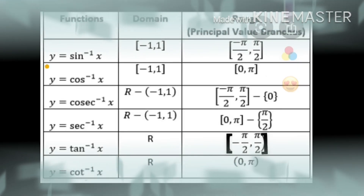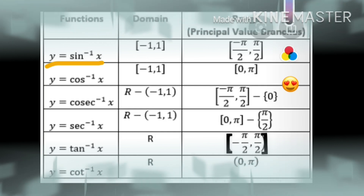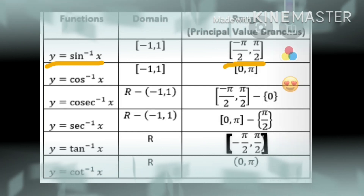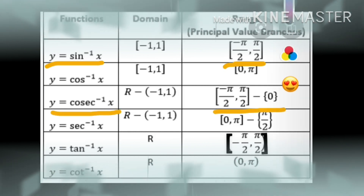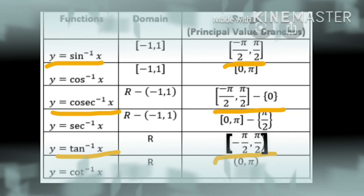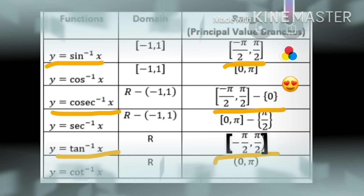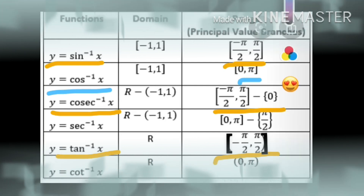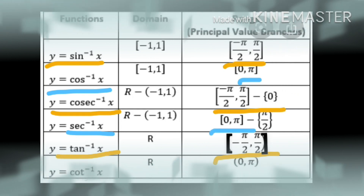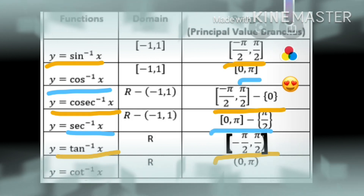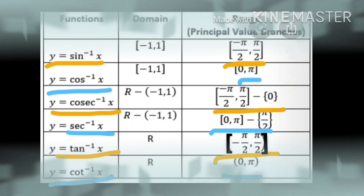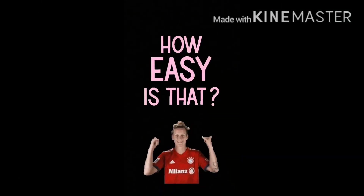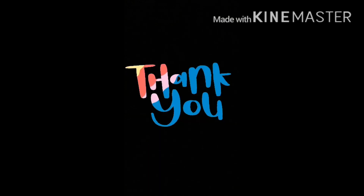Now let's revise. The principal value branch for sin inverse x is closed interval minus pi by 2 to pi by 2. For cosecant inverse x it is closed interval minus pi by 2 to pi by 2, excluding 0. For tan inverse x it is open interval minus pi by 2 to pi by 2. For cos inverse x it is closed interval 0 to pi. For secant inverse x it is 0 to pi, excluding pi by 2. For cot inverse x it is open interval 0 to pi. I hope you find it easy — it always seems difficult unless we try. Thank you.